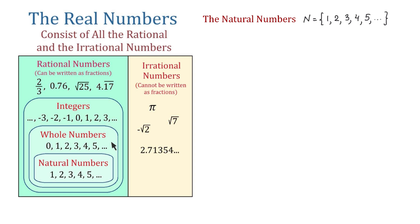The whole numbers use 0 and the natural numbers, and to represent them we use letter W. So we write W equals braces 0, 1, 2, 3, 4, 5, and so on.